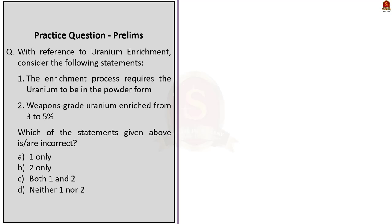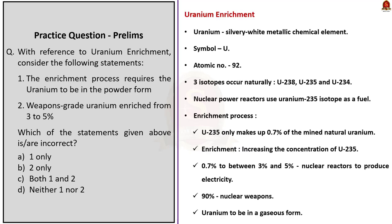We will solve our first question, which talks about uranium enrichment. Let us see few facts about uranium. Uranium is a silvery-white metallic chemical element with the symbol U and the atomic number 92. Uranium has the highest atomic weight of all naturally occurring elements. There are three isotopes of uranium which occur naturally: uranium-238, uranium-235 and uranium-234. The majority of nuclear power reactors use uranium-235 isotope as a fuel.